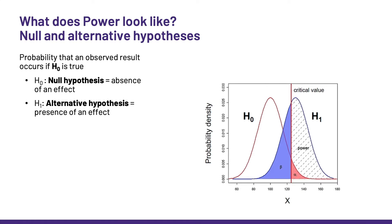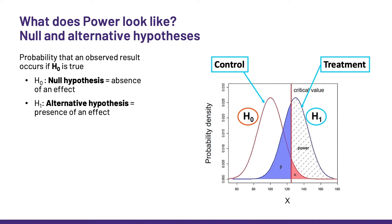So how does power look like? We can try this figure and go over its elements, starting with the null and the alternative hypothesis. Here we are thinking about the probability that an observed result occurs if the null is true. We have the null hypothesis in red — that's the absence of an effect — and the alternative hypothesis in blue, corresponding to the presence of an effect. We can also think of the red curve as a control group and the blue one as a treatment group.